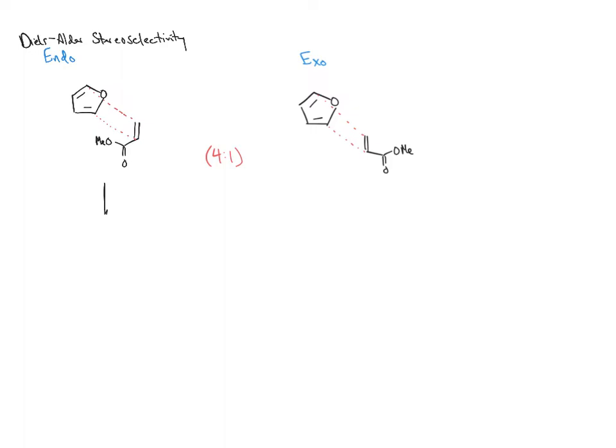What explains this endo selectivity? Let's draw the products. We get a bridged bicyclic system with an oxygen atom, a new double bond, and the methyl ester tucked underneath the bicycle — that's the endo product. In the exo product, we again form this bridged bicycle, but the methyl ester is oriented away.